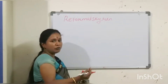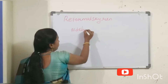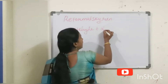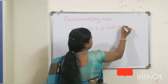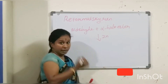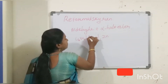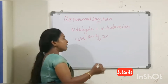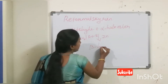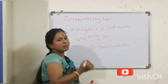Carbonyl compounds are aldehydes and ketones. An aldehyde or a ketone reacts with alpha-haloester in the presence of zinc metal, using inert solvents like benzene or ether. It gives a beta-hydroxyester.